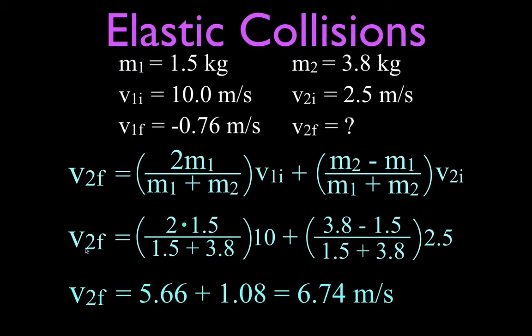And now we're going to get that the final velocity of mass number two is, this term is 5.66, this term is 1.08 meters per second, we add those together and mass number two is now moving with a velocity of 6.74 meters per second. That makes sense because mass number one hits mass number two and now it's going faster.